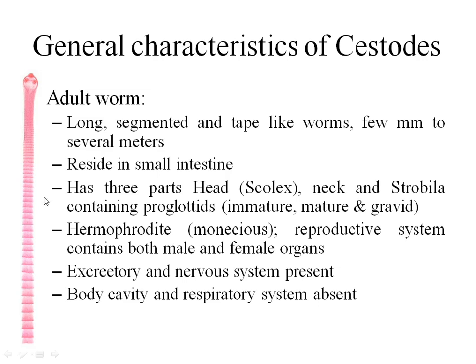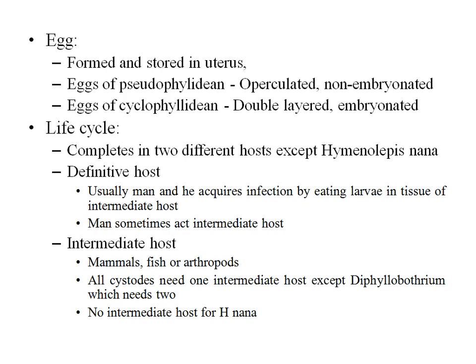The proglottids can be subdivided into immature, mature, and gravid. These worms are hermaphrodite, meaning both sexes are in the same organism — they're also called monoecious. They have excretory and nervous systems, but body cavity and respiratory system are absent, as seen in nematodes. Eggs are formed and stored in the uterus. Eggs of pseudophyllidine cestodes are operculated and non-embryonated, whereas eggs of cyclophyllidine cestodes are double-layered and embryonated.